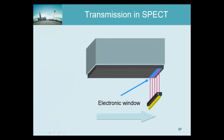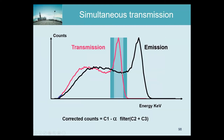You can also tell the computer exactly where to expect transmission photons, and just before and after the source passes a particular position, what you measure should be emission only — giving you a good estimate of the emission contribution in your transmission window. Then the triple energy window method is applied, because you have scatter from the transmission source as well as from the emission activity. You put two windows assuming they measure just the scatter contributions, add them, filter them, find a good weight, and subtract them to get the transmission counts.